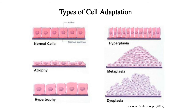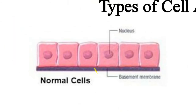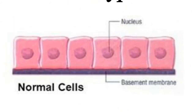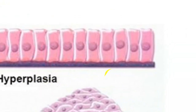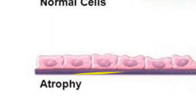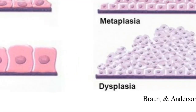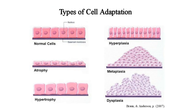We have six types of cell adaptations: hyperplasia, metaplasia, atrophy, hypertrophy, and dysplasia. In sabko ek ek karke dekhte hain ki kya kya changes aati hain adaptation ke baad.